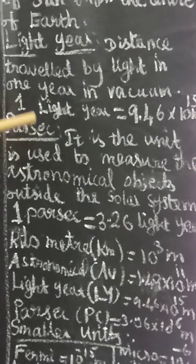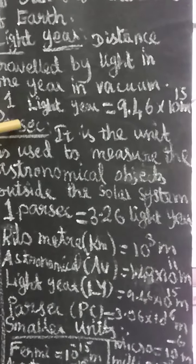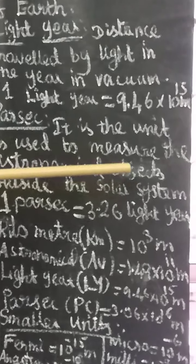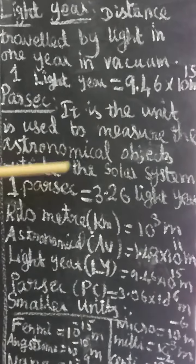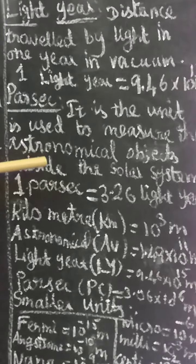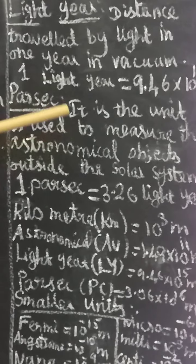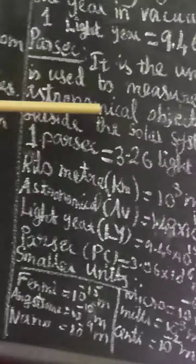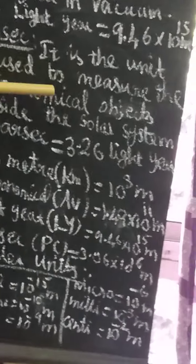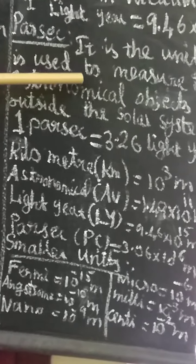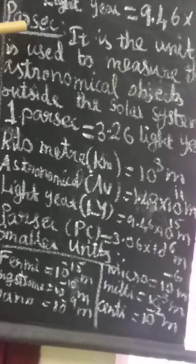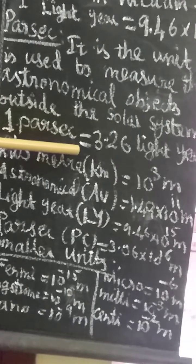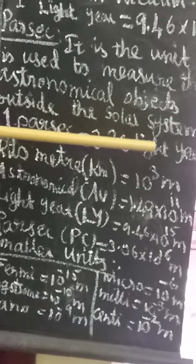The next unit is parsec. Parsec is the unit used to measure astronomical objects outside the solar system. You use parsec when measuring certain astronomical objects. One parsec is equal to 3.26 light years.